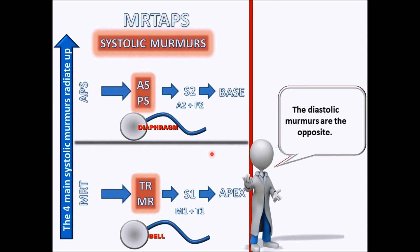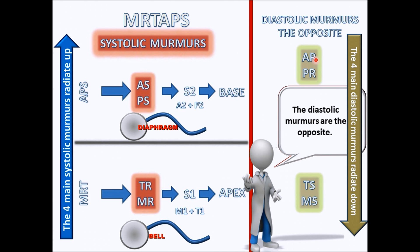Now let's figure out which murmurs are diastolic. The diastolic murmurs are the opposites of the systolics — you only have two choices: stenosis or regurgitation. So if aortic stenosis is systolic, its opposite AR is diastolic. Pulmonic stenosis gives us PR; tricuspid regurgitation gives us TS; and MR gives us MS. All diastolic murmurs radiate downward, opposite to systolics.